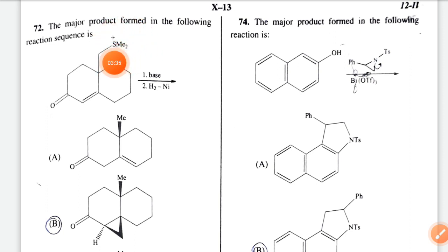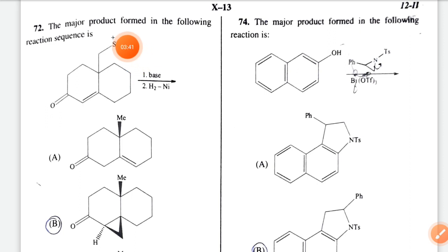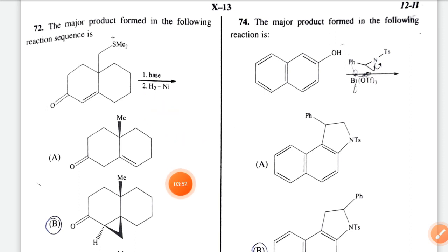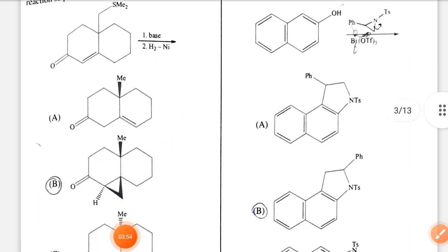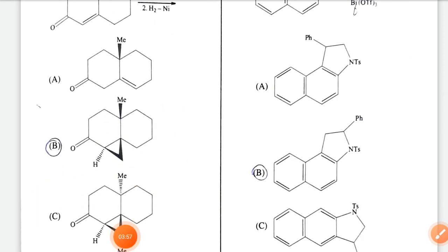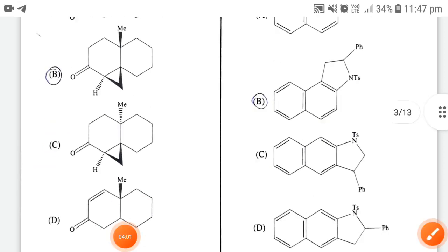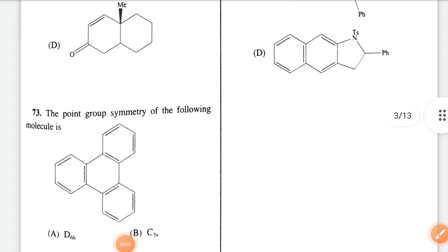Option B — method B uses a non-stabilized ylide, so a three-membered epoxide ring is formed. However, the distance between the groups is very high, so the given option is option B.